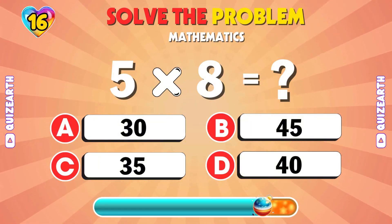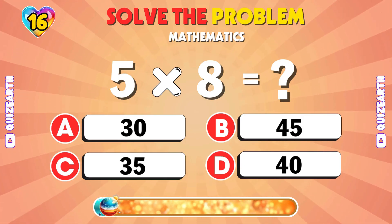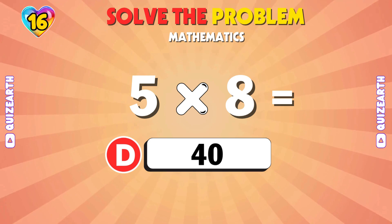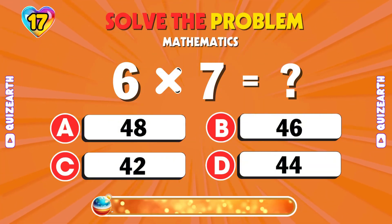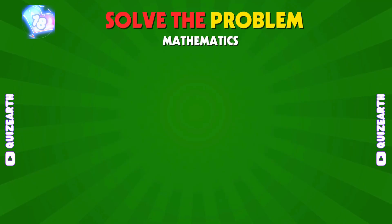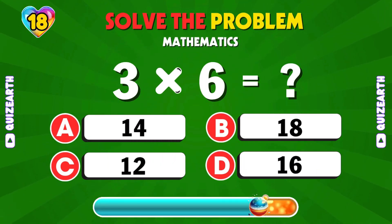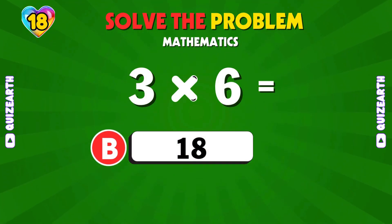Focus in. What's 5 times 8? Correct answer, 40. 6 times 7 equals what? Let's go, 42. You know this one, 3 times 6. You got it, 18.